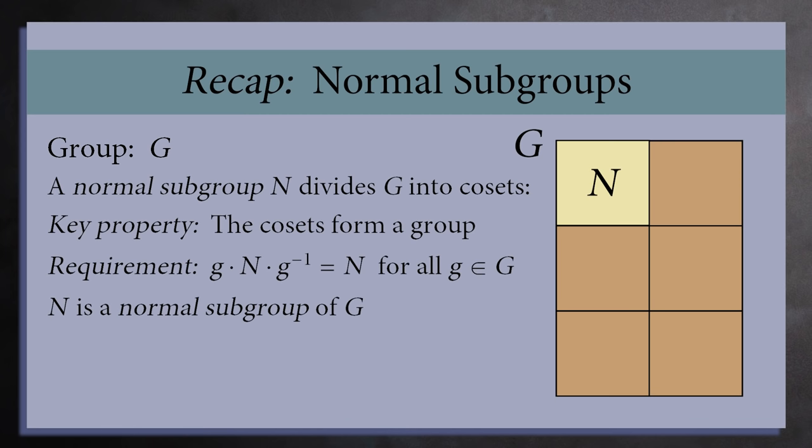If this is true, then N is called a normal subgroup of G, and we show this with a little triangle.